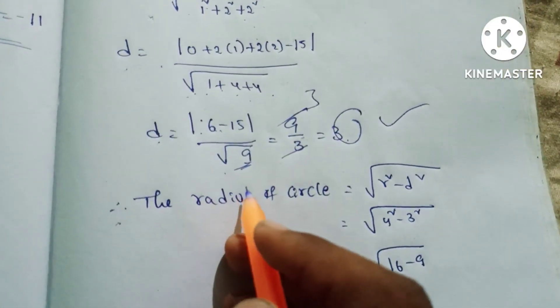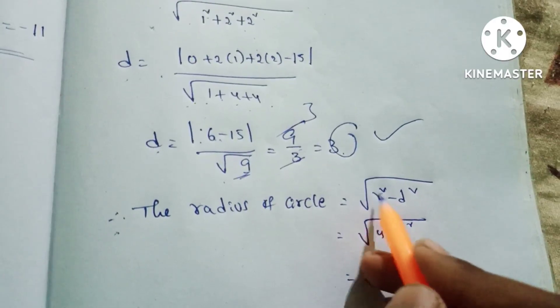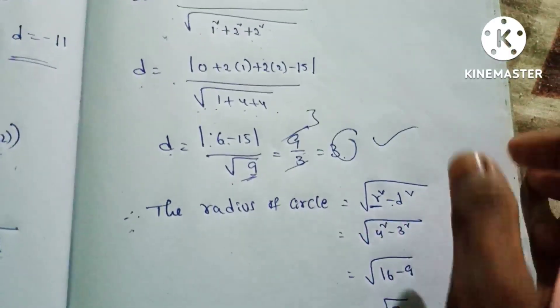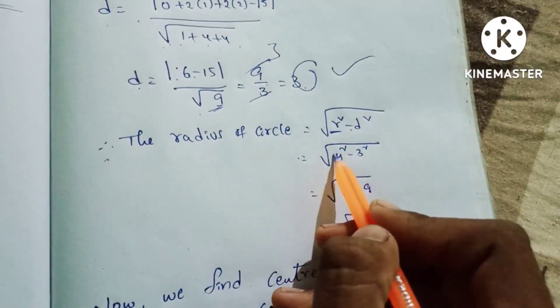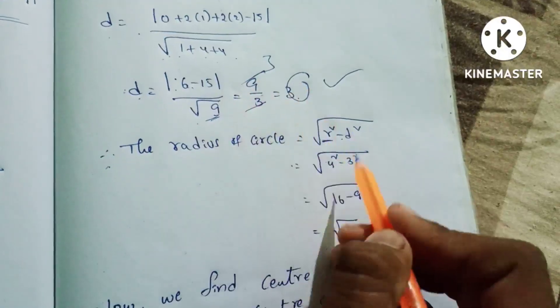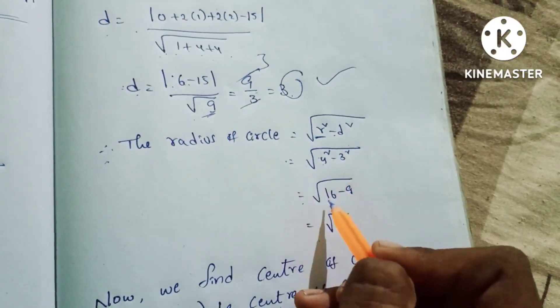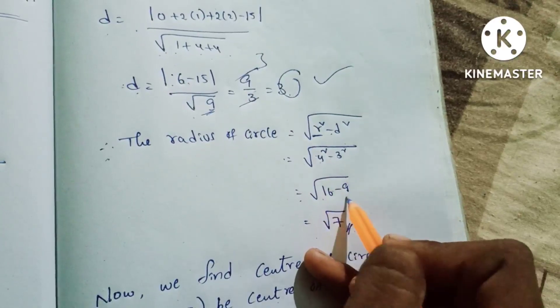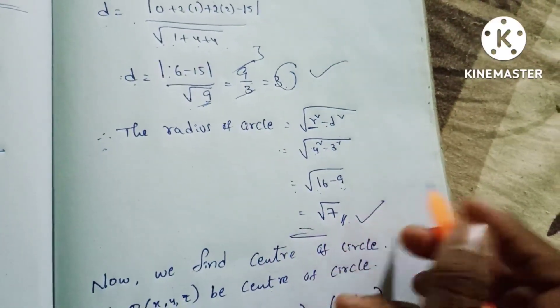Therefore the radius of the circle is given by the formula √(R² - d²), where R is the sphere radius = 4 and d = 3. So the circle radius = √(4² - 3²) = √(16 - 9) = √7.